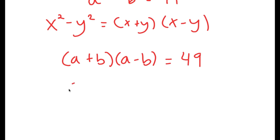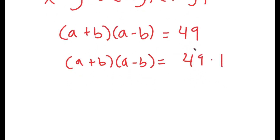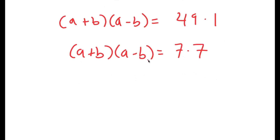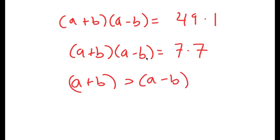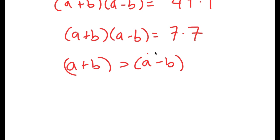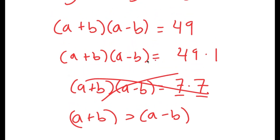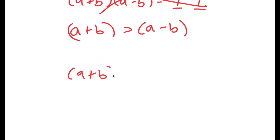From here, I can rewrite 49 as 49 times 1, which is true, and also as 7 times 7. Now, we obviously know that a plus b is going to be greater than a minus b. So we can't rewrite a plus b times a minus b as 7 times 7, since 7 and 7 are equal. So that possibility is out, and 49 times 1 is the only possibility here.